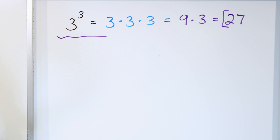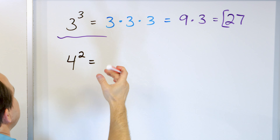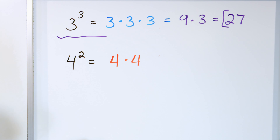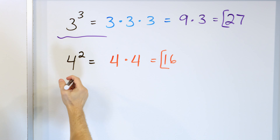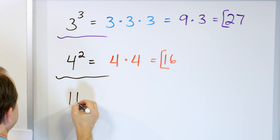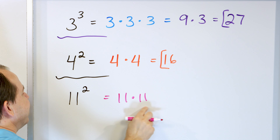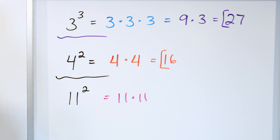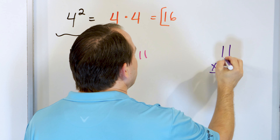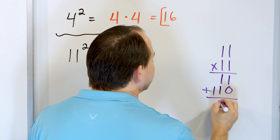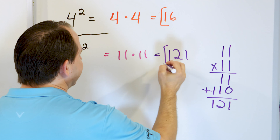Let's take a look at 4 to the power of 2. We take the base 4 and multiply it by itself — 4 times 4 is 16. Once you get the hang of exponents, they're actually quite easy. What about 11 to the power of 2? 11 to the power of 2 means we take 11 and multiply it by itself. You might remember 11 times 11 is 121 — if not, just multiply it out: 1×1=1, carry down, and you get 1, 2, 1. The answer is 121.